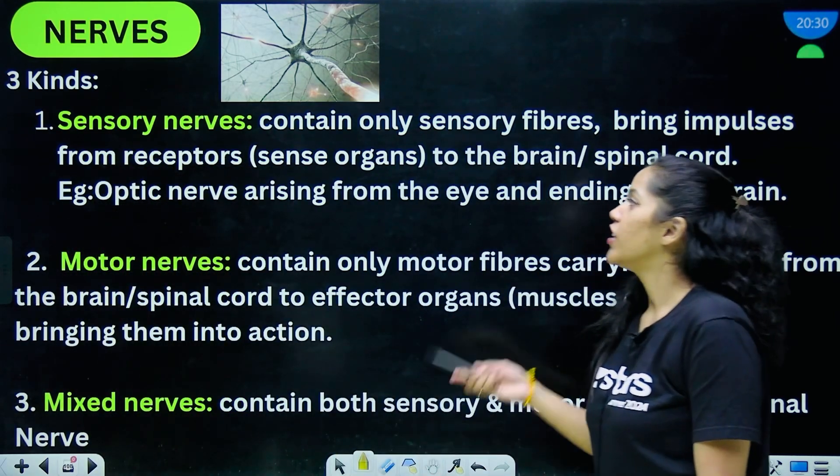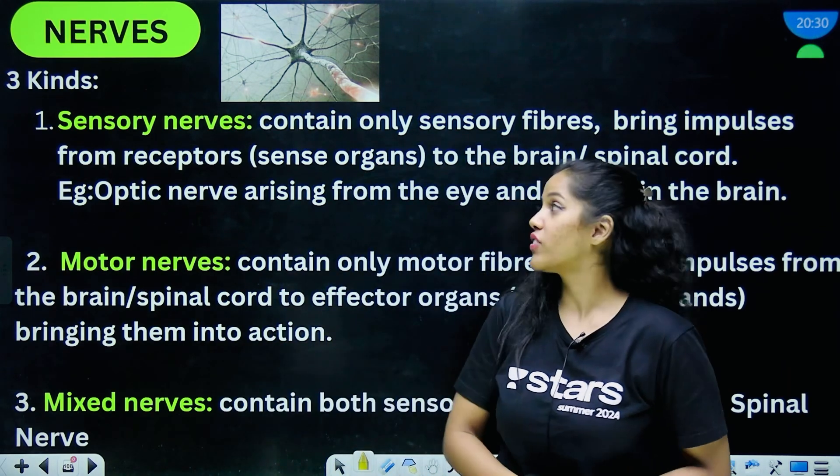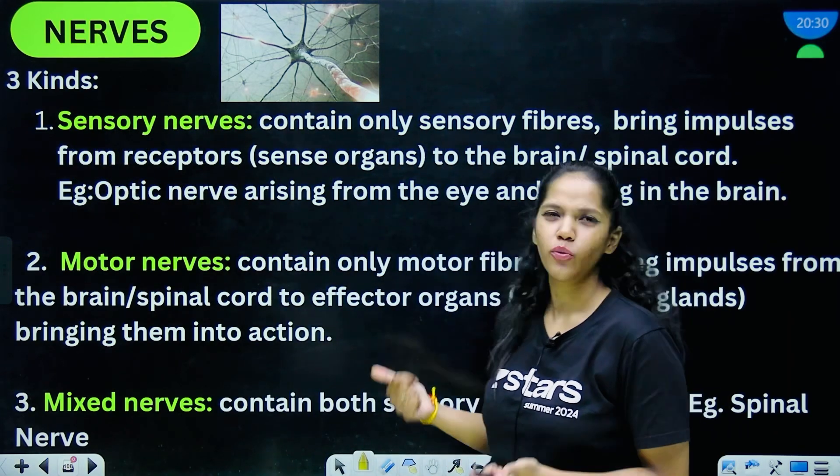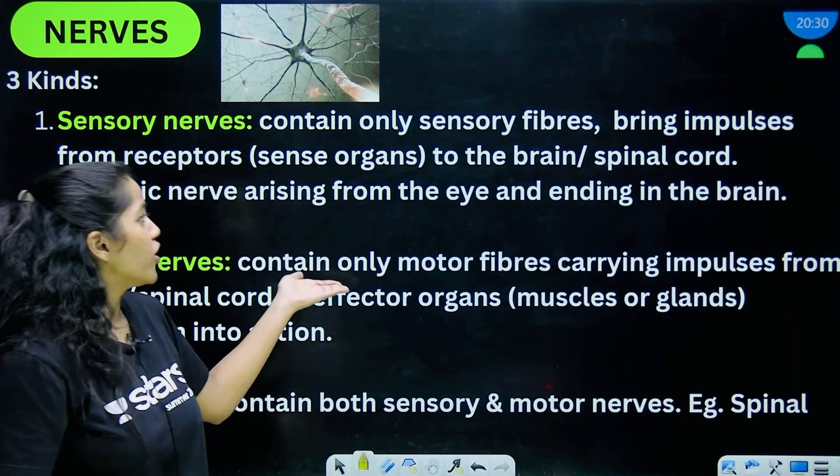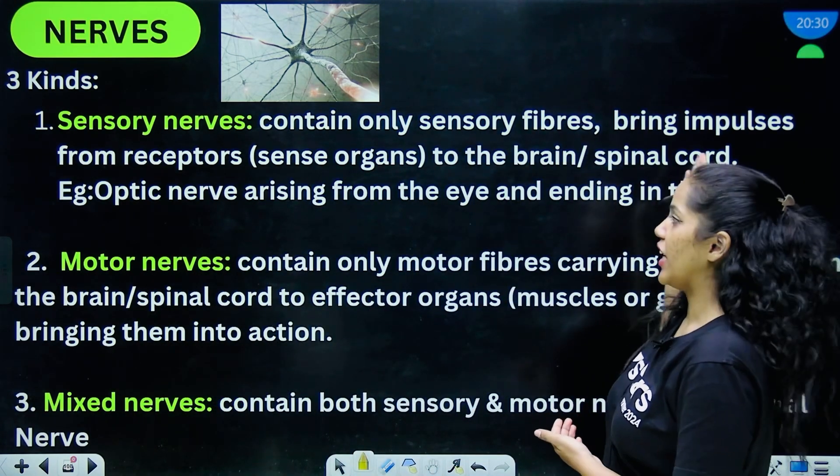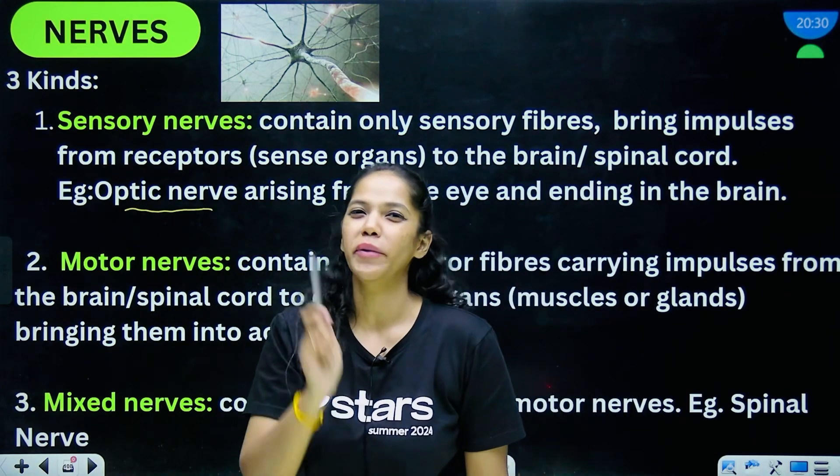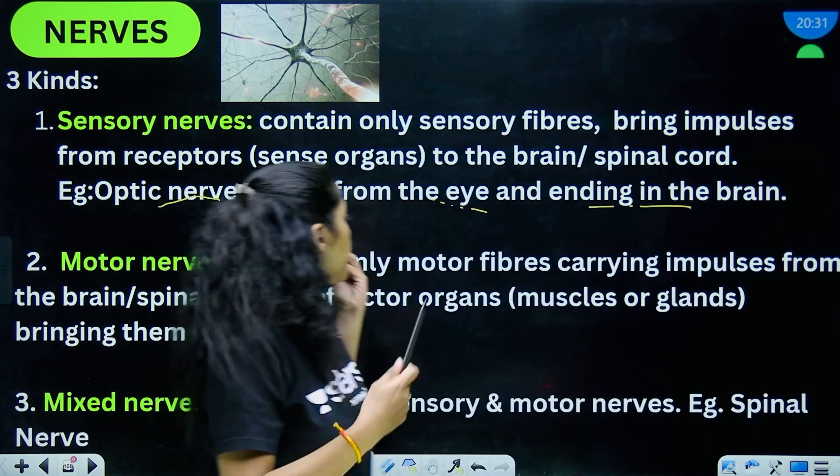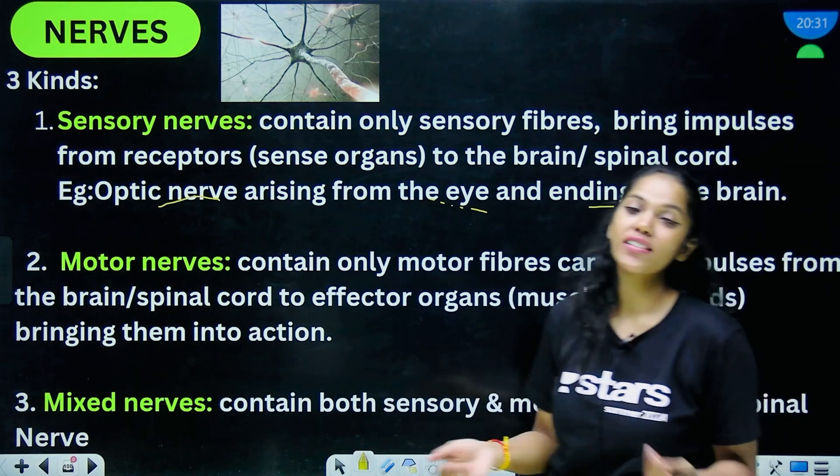So nerves again, like the neurons, the different types of neurons, nerves again are of three types very similar, okay. That's the sensory nerves—they contain only sensory fibers, they bring impulses from the receptors (receptors are nothing but the sense organs) to the brain and spinal cord. Example, your optic nerve. I hope all of you all know that when you say optic it automatically relates to your eye body. And next we have the motor neurons—they contain only motor fibers and they carry impulses from the brain and spinal cord to the effector organs, that is our muscles or our glands, bringing them into action.